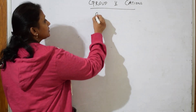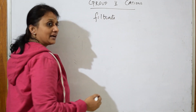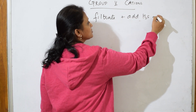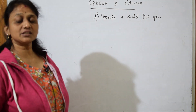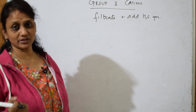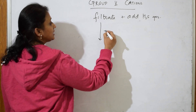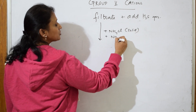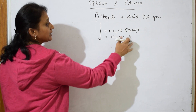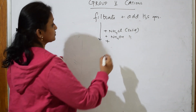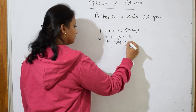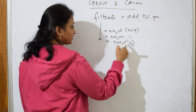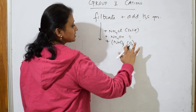Take the filtrate from Group 4 and add H₂S gas or H₂S pellets. Then the group reagent addition begins: first add ammonium chloride (solid), then ammonium hydroxide, followed by excess ammonium carbonate. This makes the solution alkaline in nature. Ammonium carbonate has a valency of two for the carbonate and three for ammonium.